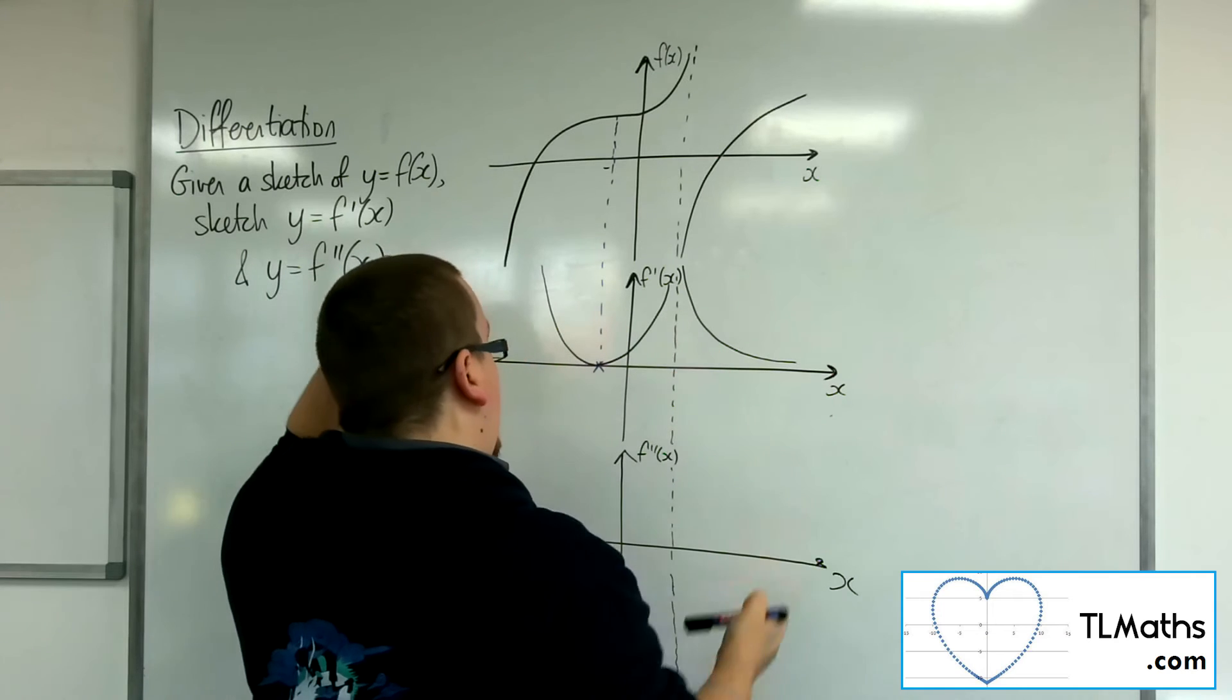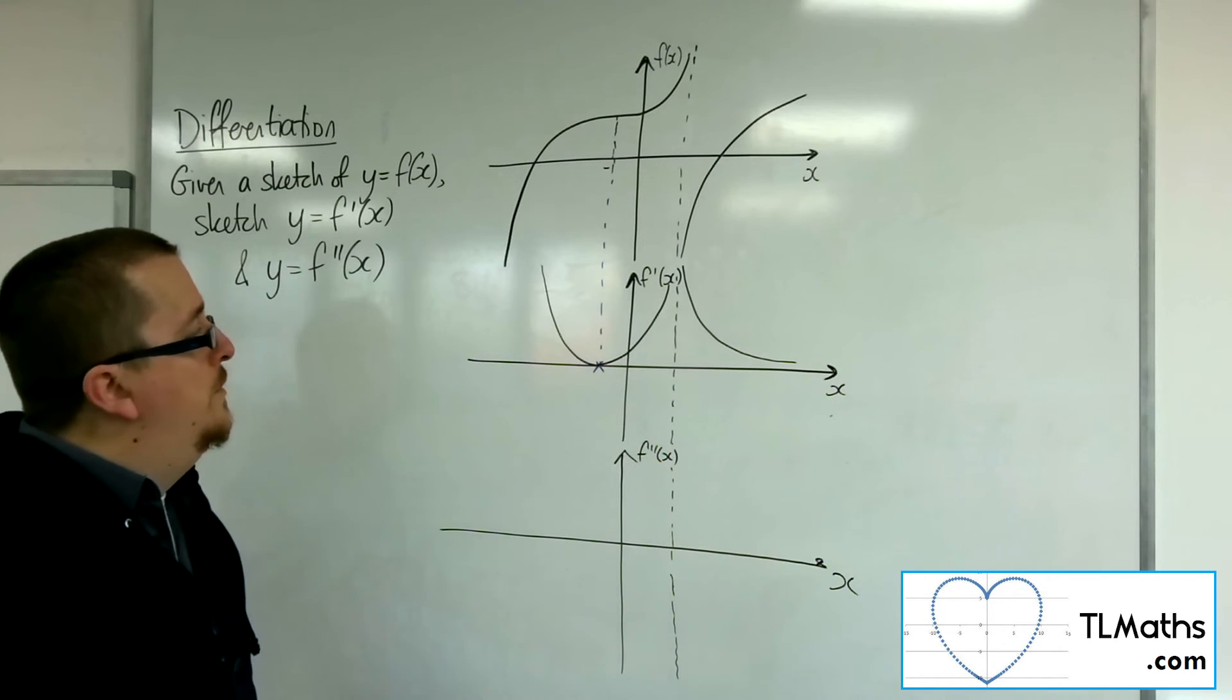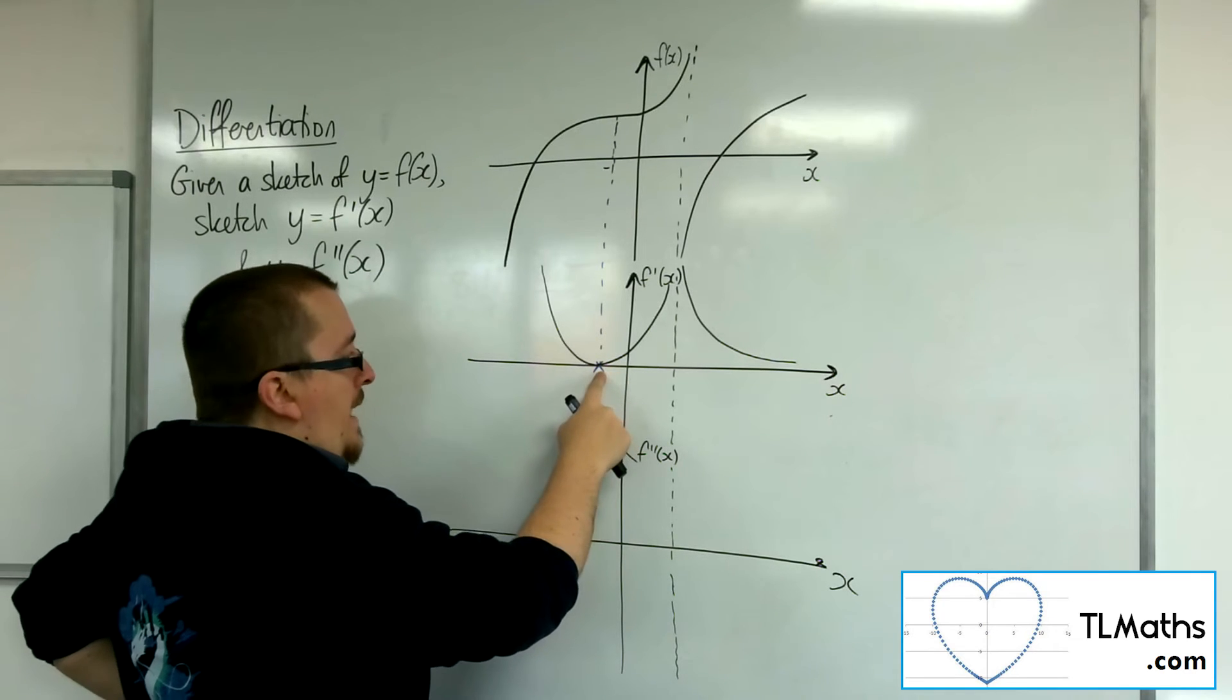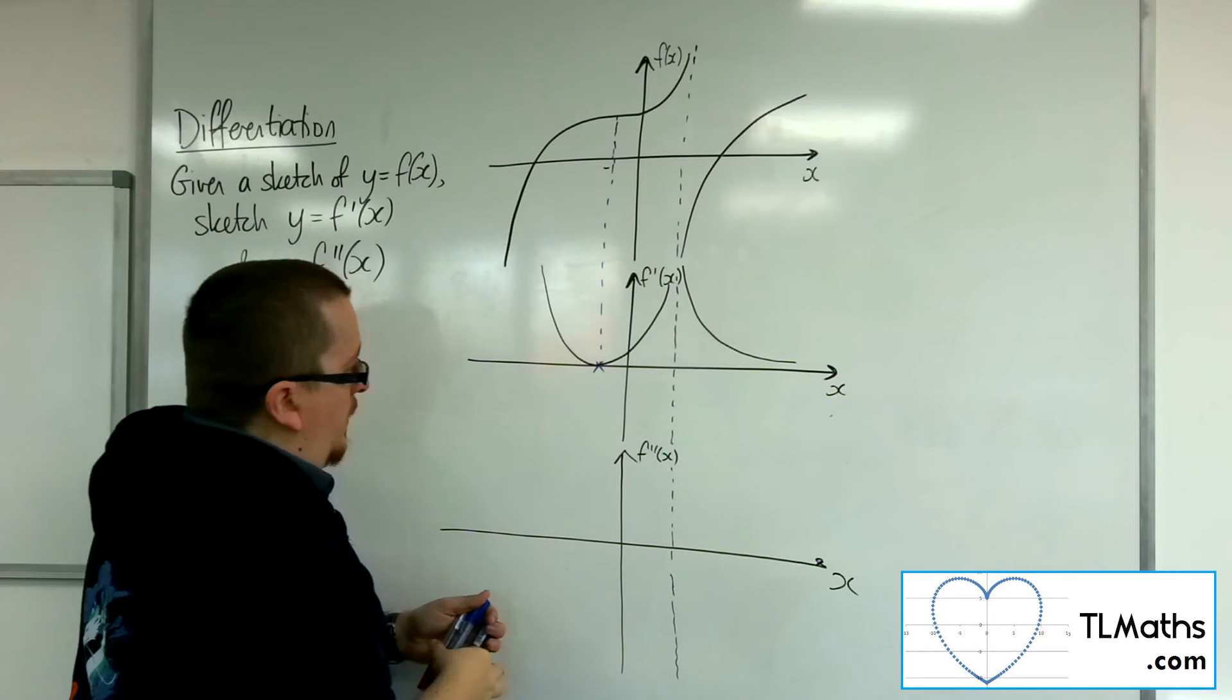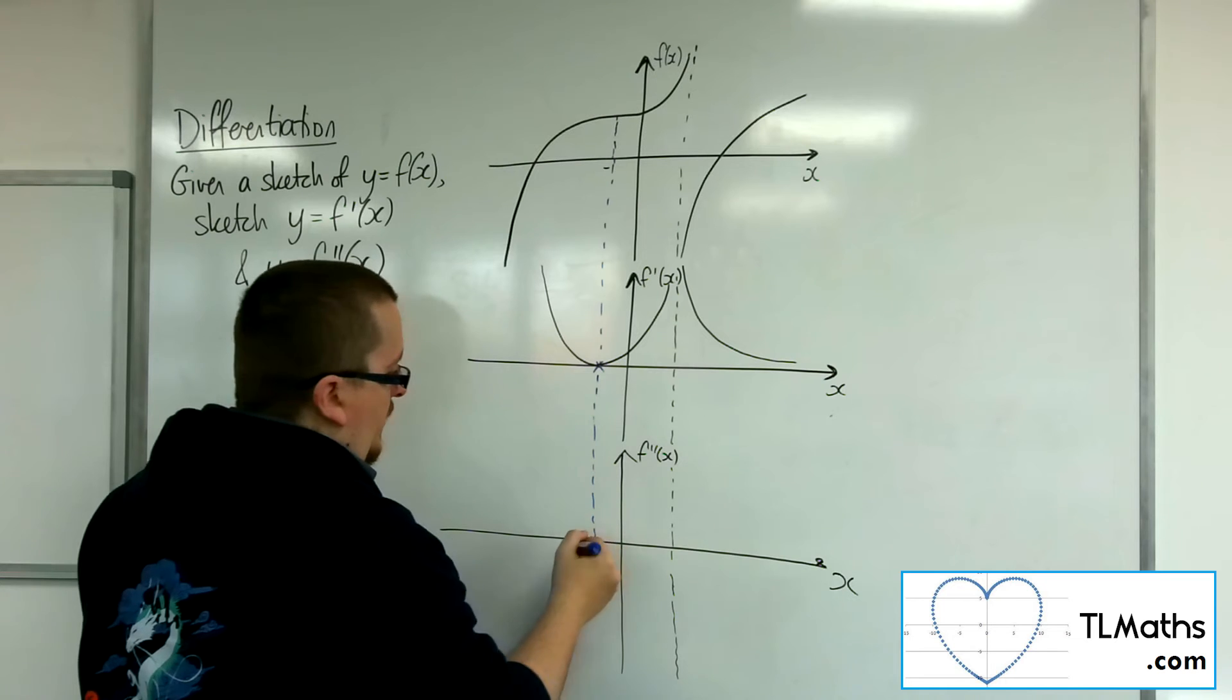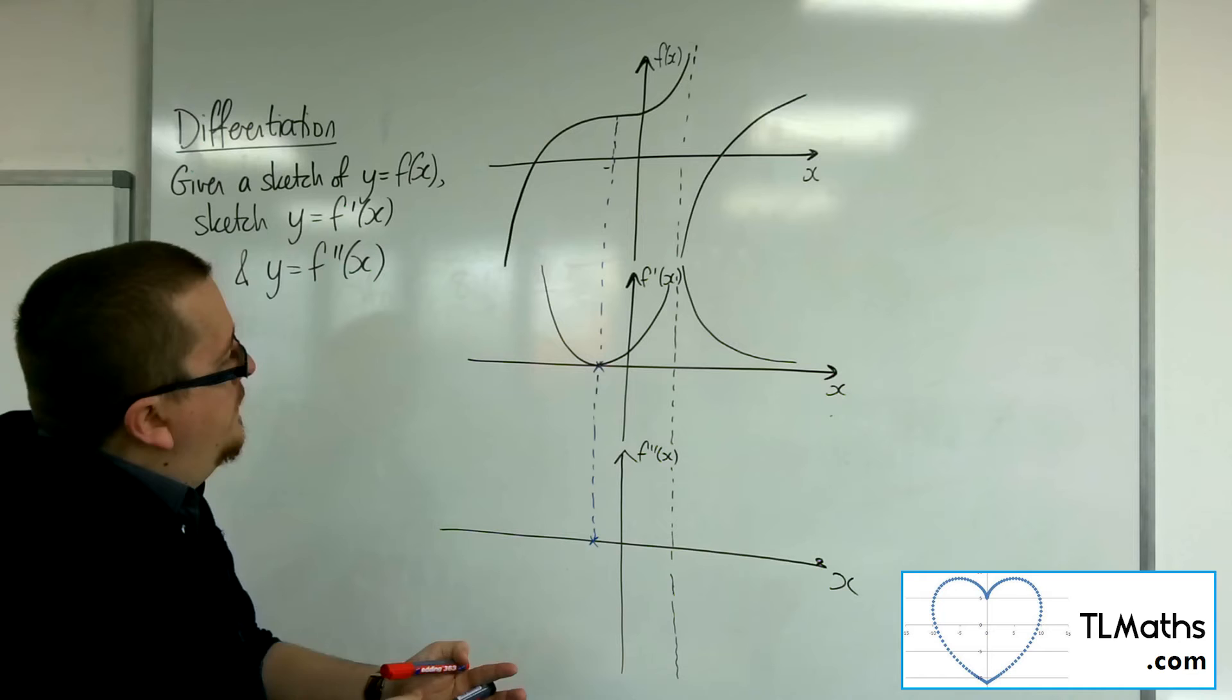Now, this curve here has no stationary point, so it doesn't actually cross through. Oh, sorry, apart from, well, sorry. It does have a stationary point there. And so, because it's stationary there, the second derivative will be zero, so we are going to be crossing through the x-axis at that point. Apologies. I don't know what graph I was looking at.